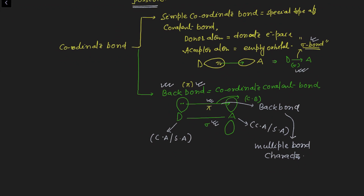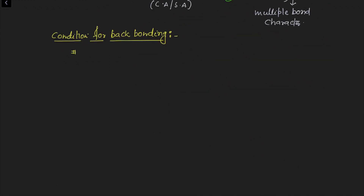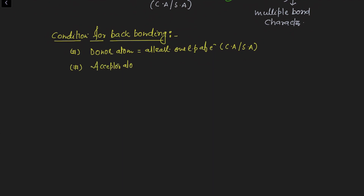Now, what are the conditions for back bonding? The first condition is that the donor atom — whether central or surrounding — must have at least one lone pair of electrons. The second condition is that the acceptor atom — whether surrounding or central — must contain an empty orbital.